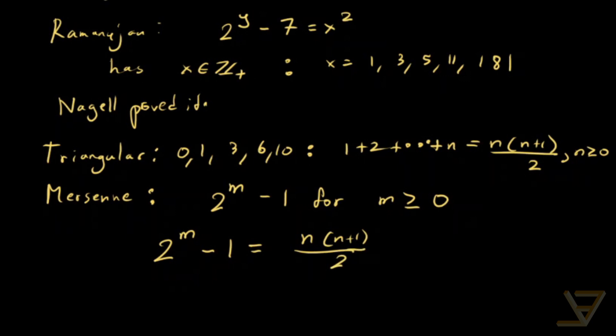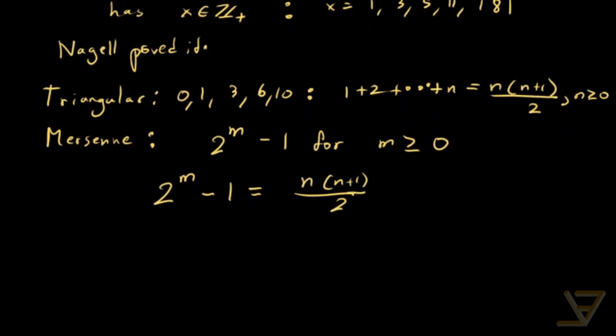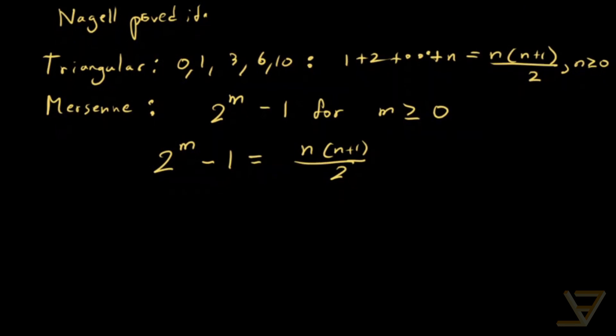Sorry, positive integer solutions. We'll include 0 in the end because that's also a solution. So first of all, we clear the denominator. So we get 2 to the m plus 1 minus 2 is equal to n squared plus n.